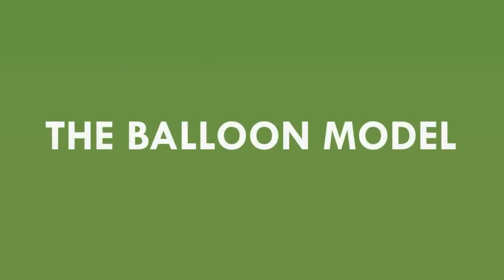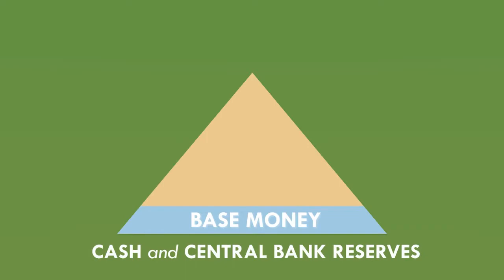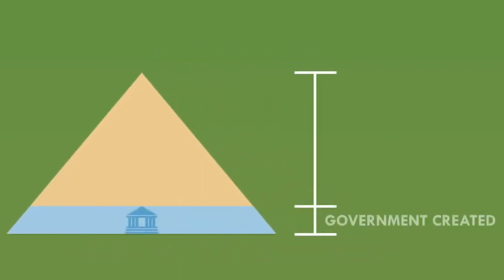Let's revisit the multiplier model from the last video. It describes the money system as having a base of base money — in the simplified version just cash, but in reality also the electronic central bank reserves that banks keep in their accounts at the Bank of England. On top of that base sits the third type of money: the electronic bank-created money. So the pyramid is split into a base of government-created money and a tower of bank-created money on top.